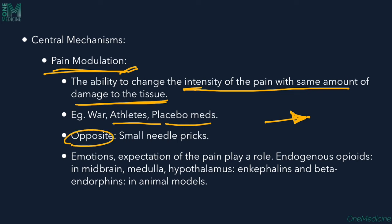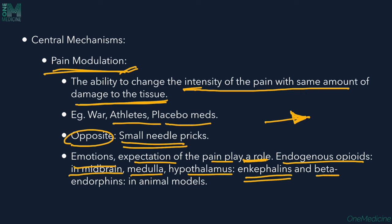The opposite also occurs: when anticipating a painful stimulus like an IV cannula, we feel more pain than the actual stimulus warrants. Nursing staff often ask patients to look away during needle insertion for this reason. Emotions and expectation of pain play a role. Endogenous opioids in the midbrain, medulla, and hypothalamus — including enkephalins and beta-endorphins — have been shown to reduce pain and produce a sense of well-being in animal models.